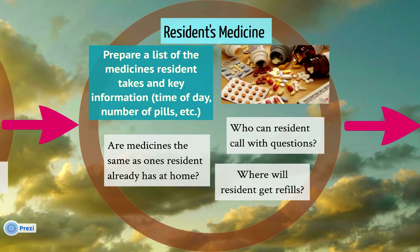Another important issue to discuss in the care plan meeting is the resident's medication. Facility staff should help the resident prepare a list of medications, including the time of day to take the medicine, the number of pills that should be taken, and other such information. Other issues to address include whether the resident can take medicines they may have at home, who to call with questions about the medication, where to get refills, and how they will get to and from the dispensary. As an ombudsman, you might help by reminding residents that it's okay to ask questions about their medications during the care plan meeting.